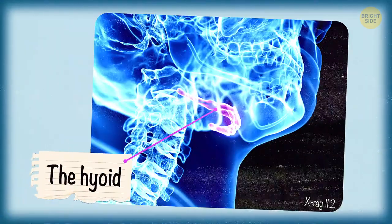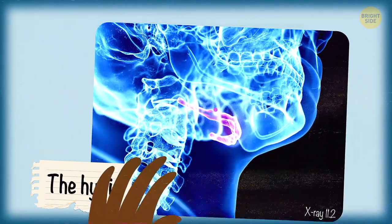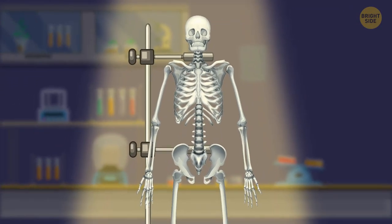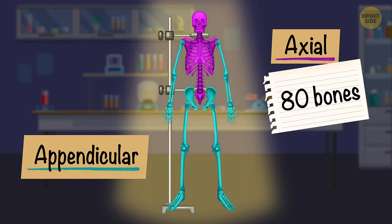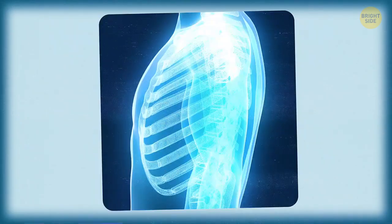The hyoid bone is in your throat and supports your tongue. Your skeleton has two parts, the axial and the appendicular. The axial part has about 80 bones, like your skull, back, and ribcage.